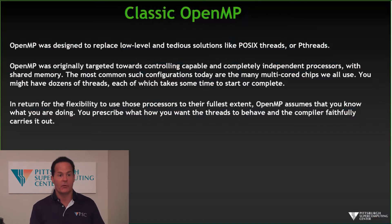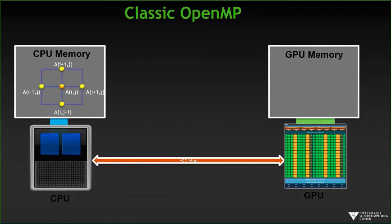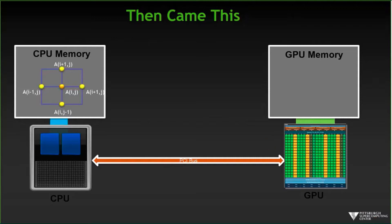OpenMP was built around that kind of model, that kind of assumption. But then came along GPUs, which have a very, very different architecture. Most notably, they have a separate memory for the GPU and for the CPU.